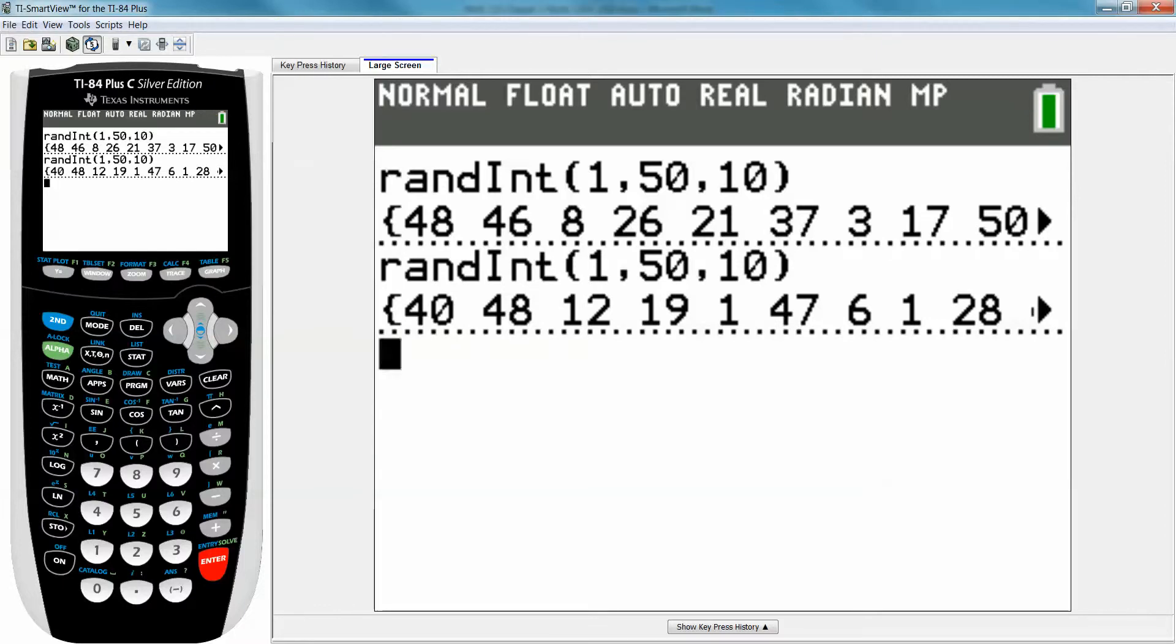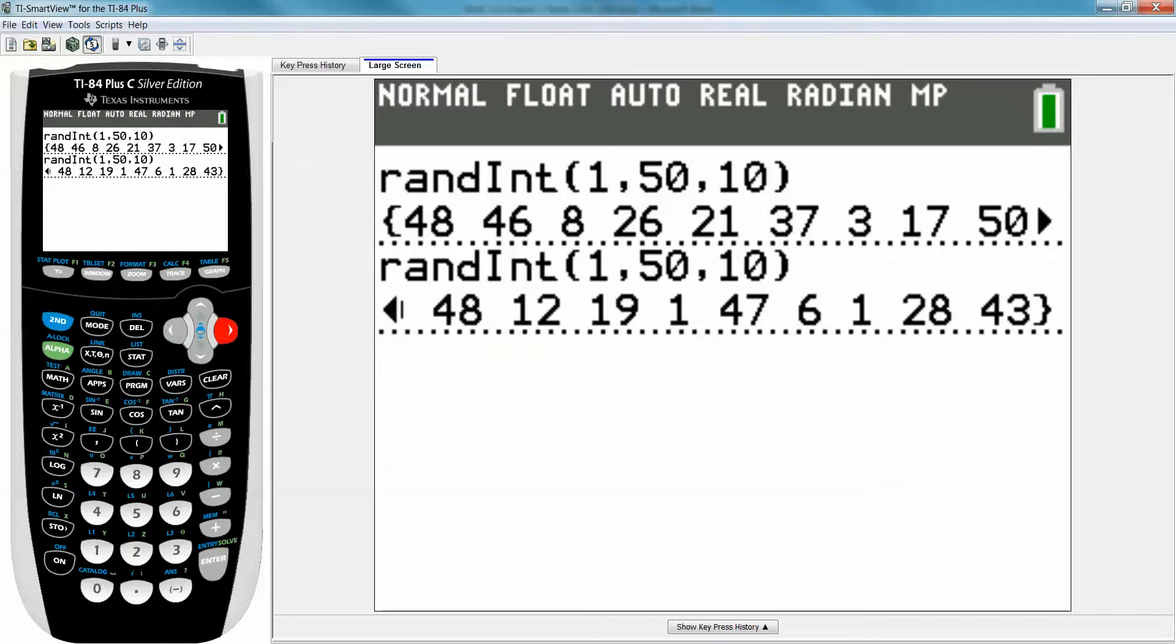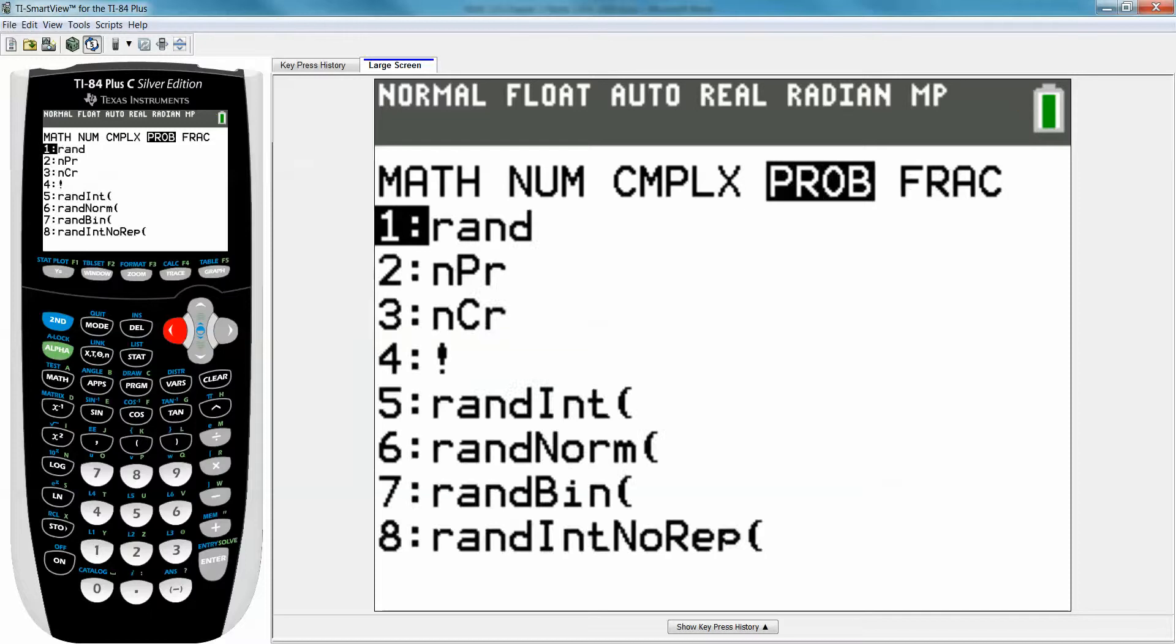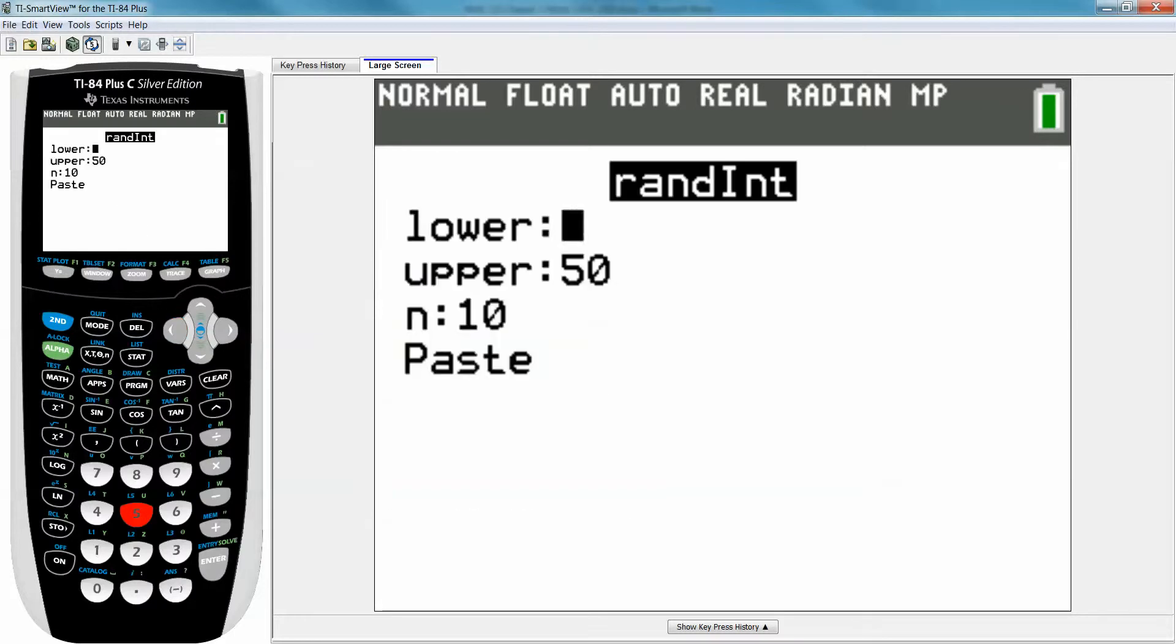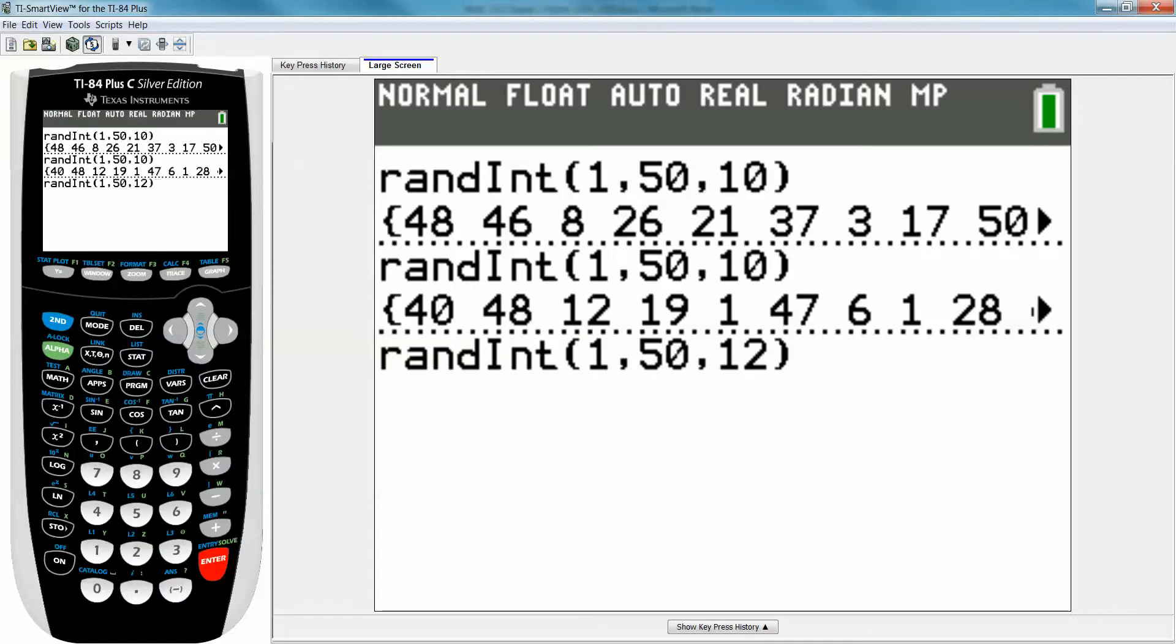Now sometimes you're going to get repetition. Sometimes it'll do a repeating number. So what you can do is you can choose to pick a larger number than you actually need. So choose like 12 or something. And that way, in case it gives you any repeats, you can just kind of throw out the extras. Right? And say, oh, see right there, 14. I don't need two 14s. So I'll just do 49, 14, 7, 3, 37, and so on. And I'll skip the repeated one.